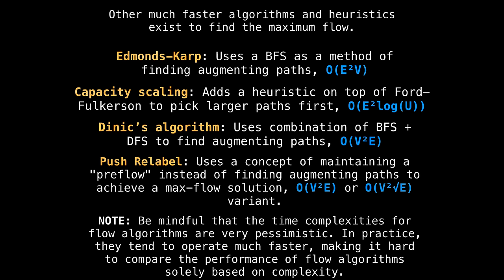Luckily, much faster algorithms and better heuristics exist to find the maximum flow value. One example is Edmonds-Karp, which is Ford Fulkerson, but instead of using a depth first search, use a breadth first search to find the shortest augmenting path from the source to the sink in every iteration. There's also capacity scaling, which is the idea of picking larger paths first to reduce the number of paths you need to find overall. And this turns out to work really well, at least from my empirical tests. Then there's Dinic's, which uses a combination of a breadth first search to first find a layered graph that guides edges towards the sink, which you then use a depth first search to actually find the augmenting paths.